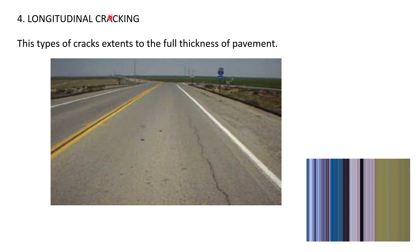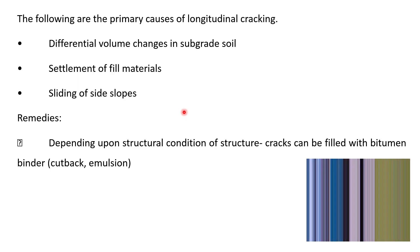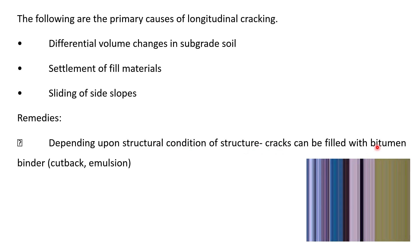Longitudinal cracking means cracks that can extend up to the full thickness and run along the length of the road. These cracks continuously appear on the surface. Causes are differential volume change in the subgrade soil due to moisture movement, settlement of materials, and sliding of slopes. Remedies depend upon the condition — cracks can be filled with bitumen binder.